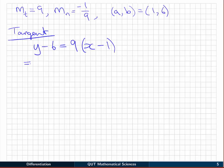And now we simply rearrange this, and write it in the normal y = mx + c form. So we have y = 9x - 9 + 6 will be -3.